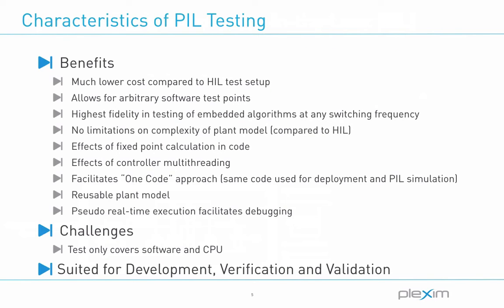The processor-in-the-loop configuration is more beneficial than MIL, as it allows the detection of platform-specific software defects, such as fixed versus floating math influence, task overruns, casting errors, variable starting delays, as well as multi-threaded execution problems like jitter and resource corruption. That, along with a lower price point, makes processor-in-the-loop a very attractive solution to developing and testing controls.